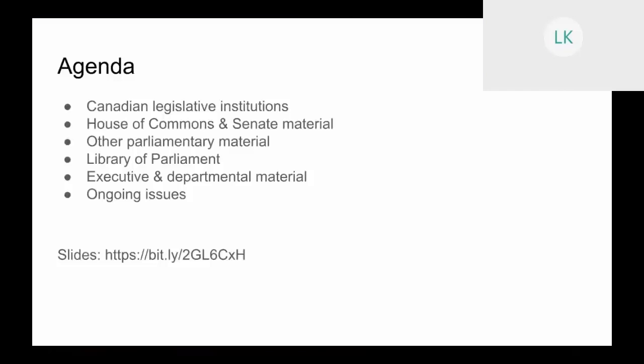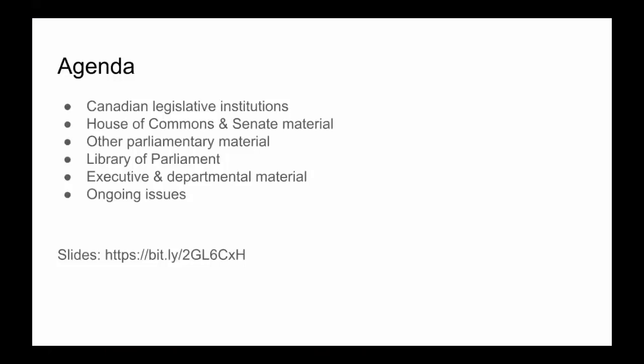Thanks for having me. I'm happy to talk to what I assume is mostly an American audience about Canadian federal material. First off, I wanted to give an overview of some of our institutions for those of you who aren't familiar with Canadian politics. I'm going to cover finding current and historical material from our House of Commons and Senate, and other parliamentary material like royal commissions and sessional papers. I'll also talk about our Library of Parliament, which is somewhat analogous to the U.S. Congressional Research Service, and touch briefly on executive and departmental material, our depository system, and some distinct challenges government information faces in Canada.